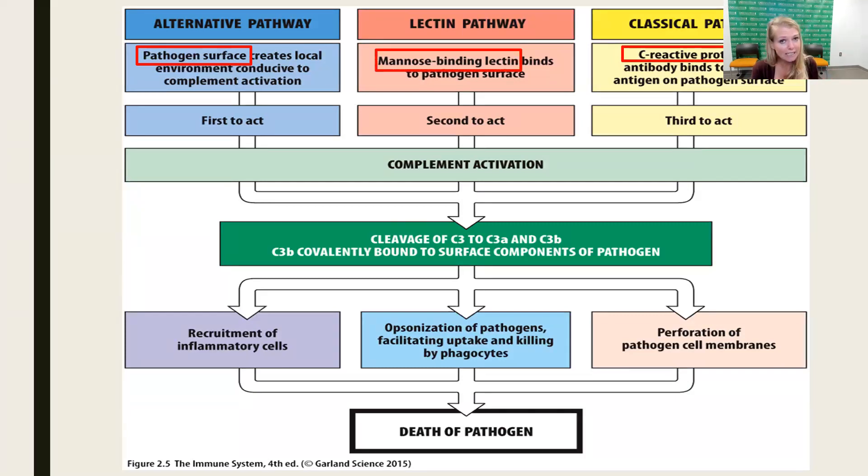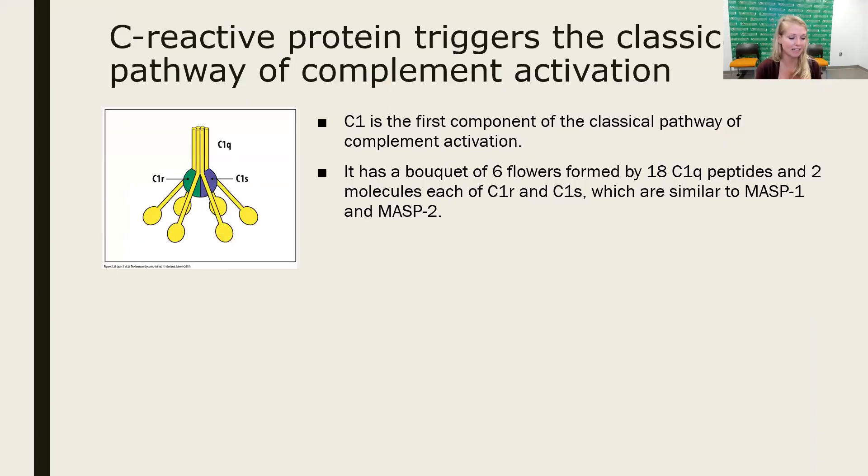Let's look at C-reactive protein. Because it is an acute phase protein, now we're covering in the innate immune system, but it can initiate the classical pathway of complement activation, much in the same way that mannose-binding lectin does. It looks very similar to mannose-binding lectin, like an upside-down bouquet of flowers. Flip it around, you have a stalk, and you have the pathogen binding pieces.